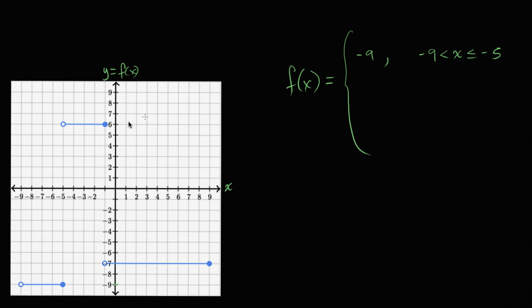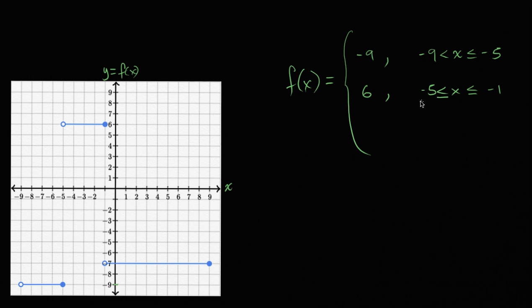The next interval is negative 5 is less than x, which is less than or equal to negative 1. Over that interval, the function is a constant 6 — it jumps up here. Sometimes people call this a step function; it steps up and looks like stairs. At x equals negative 5, the function must be defined in only one place, and that's why this can't be negative 5 is less than or equal to, because then if you put negative 5 into the function, this piece would also be filled in.